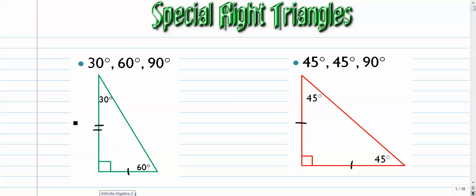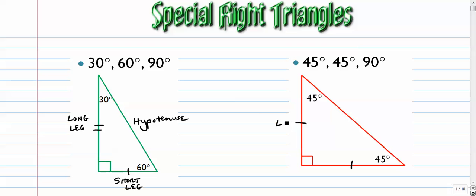In this video, you're going to hear me refer to this as the long leg, across from the 60-degree angle. This, of course, would be the short leg. This, obviously, is the hypotenuse. Over here, it's just leg and leg — they're both the same. And, of course, hypotenuse.